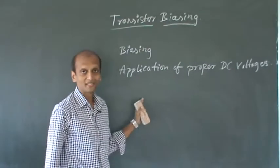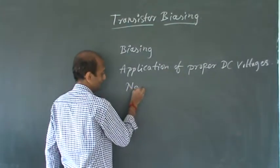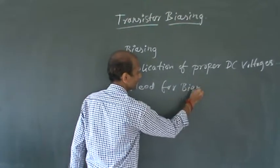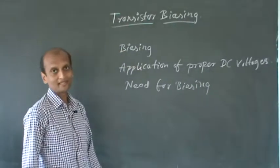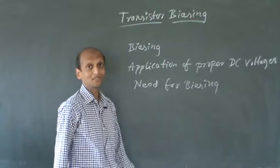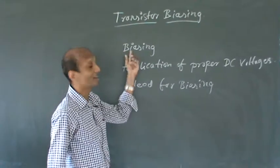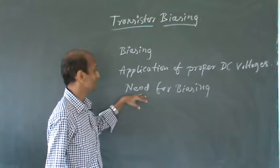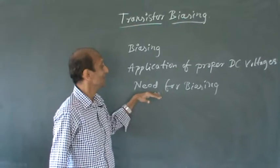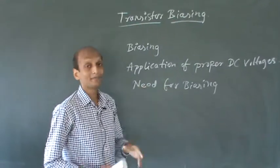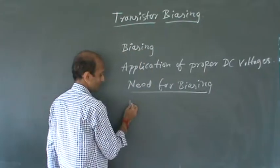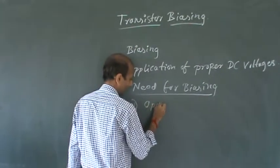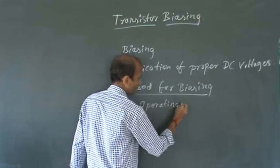We need two bias voltages. So now the next thing is the need for biasing in transistor biasing — what is the need for biasing? This is one of the questions which will be asked. The first need is the operating point.